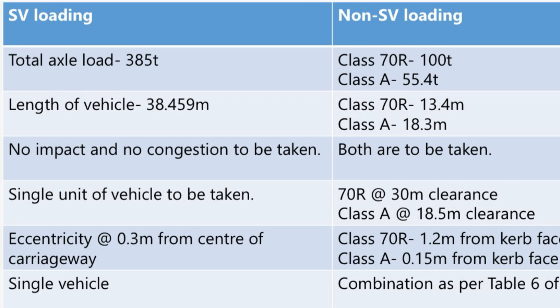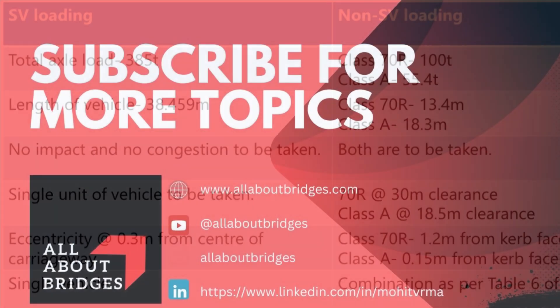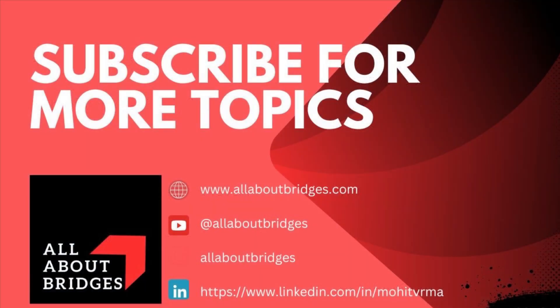6. Load Combination. In SV loading, only one special vehicle is analyzed. However, in non-SV loading, load combinations are determined as per Table 6 of IRC 6, which specifies various loading scenarios involving Class 70R and Class A vehicles together or separately for bridge design.